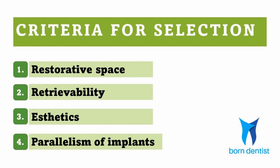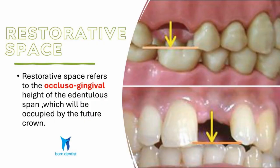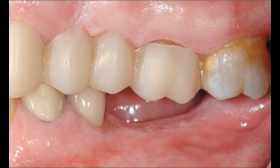Of all these four factors, the most critical is the amount of restorative space available for each case. Restorative space refers to the mesiodistal and occluso-gingival dimension of the edentulous space that will be occupied by the future crown. When we say restorative space here, we refer to the vertical component, i.e., the occluso-gingival dimension. This vertical component is very critical in prosthodontics as it decides the design and fate of the prosthesis — be it RPD, FPD, complete denture, or implant.